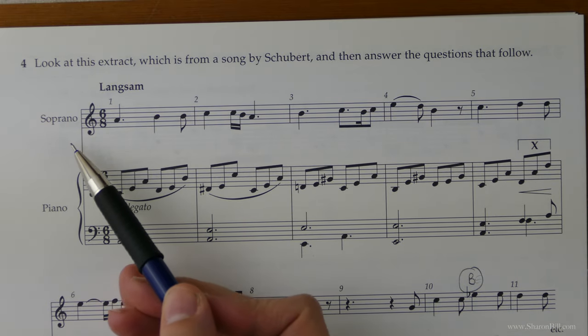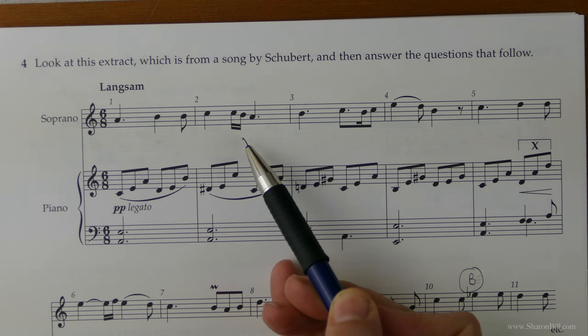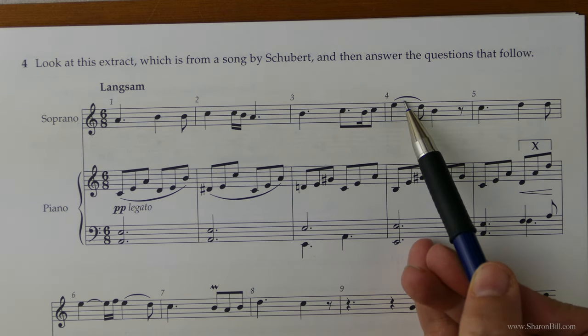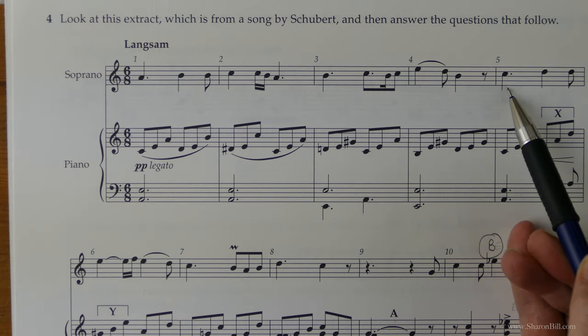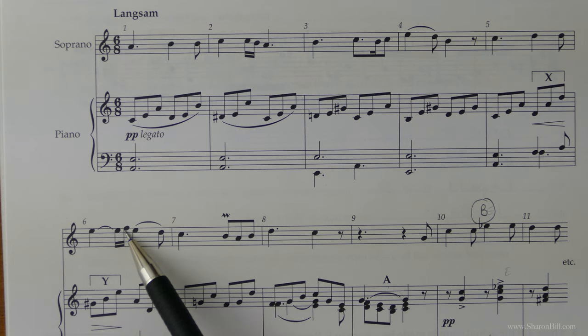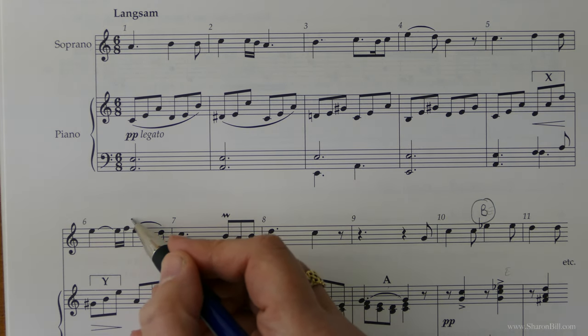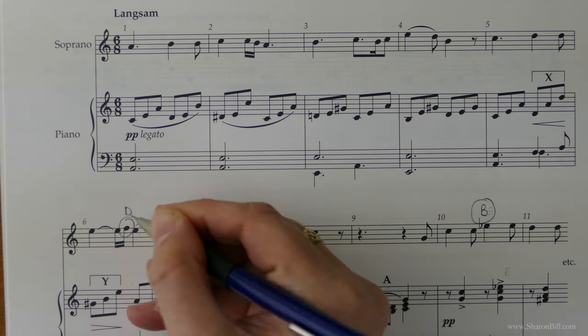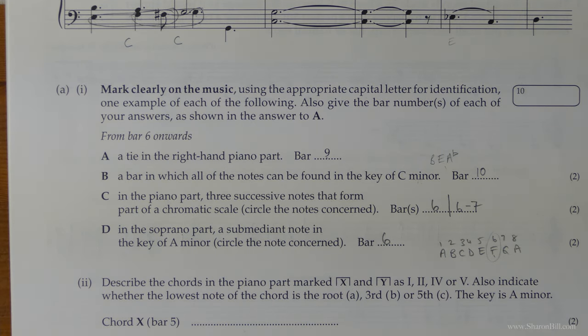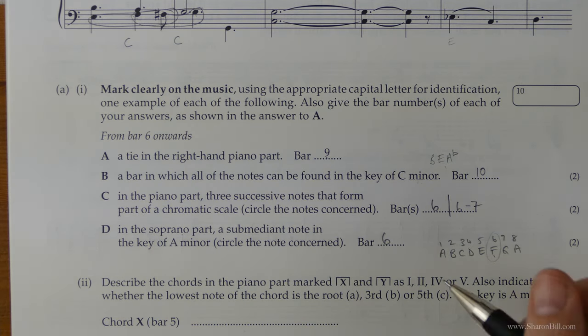So this is the soprano part here. So I can't see any note F at the moment. It could be a low F, or it could be a high F, none of which we can see yet. And yet, here we go. So in bar 6, we see a note F. So if we mark that as answer D, and we refer them to bar 6 here, we've done what was required of us.